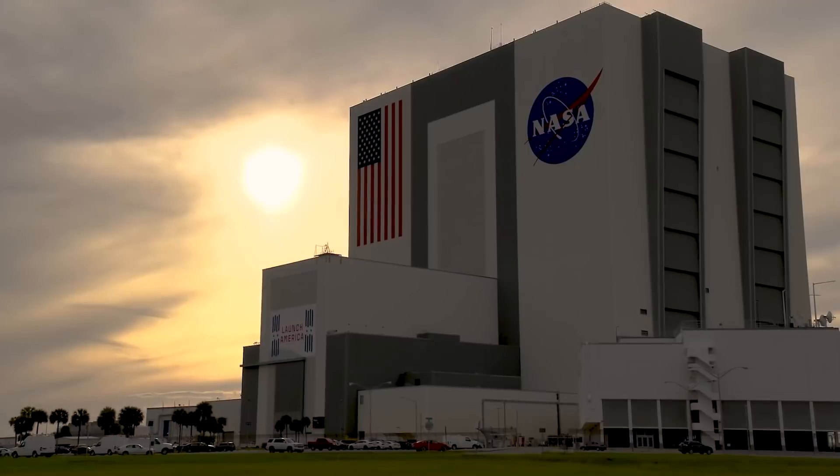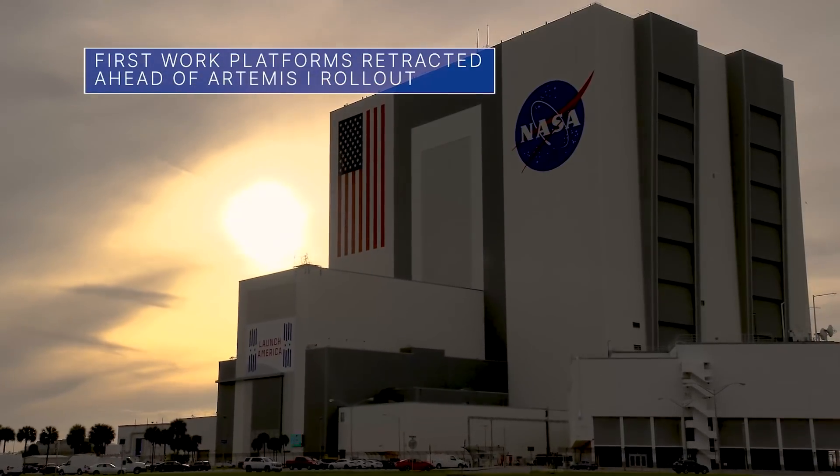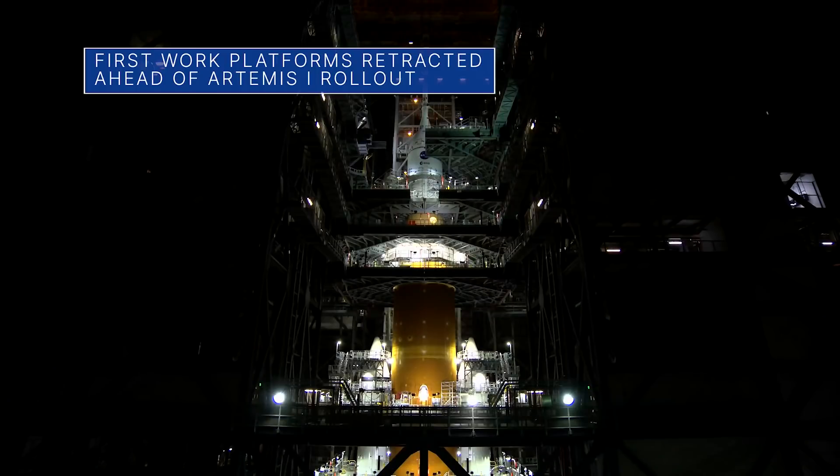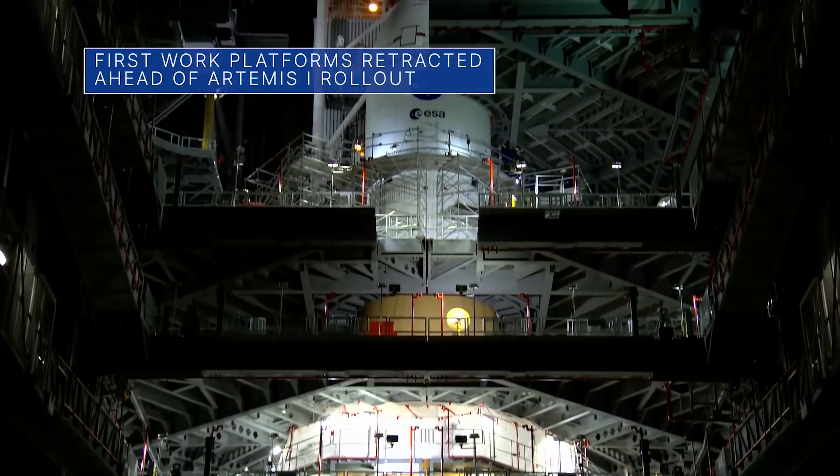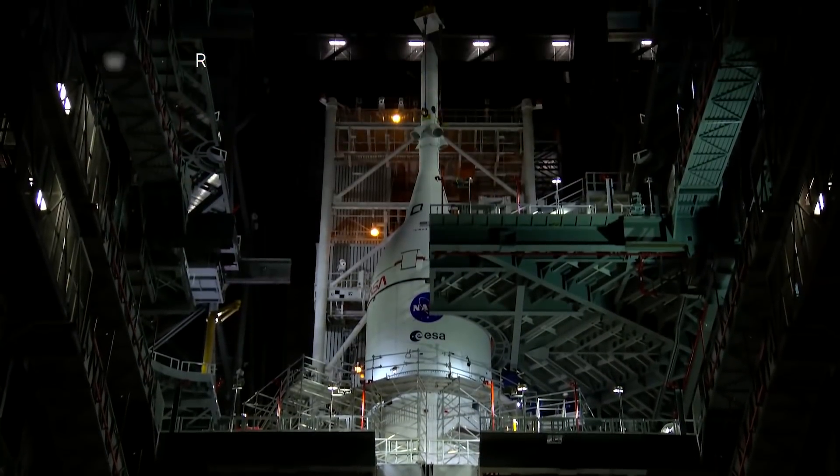Inside the Vehicle Assembly Building at our Kennedy Space Center, teams have retracted the first of the 20 work platforms surrounding our Artemis I moon rocket.